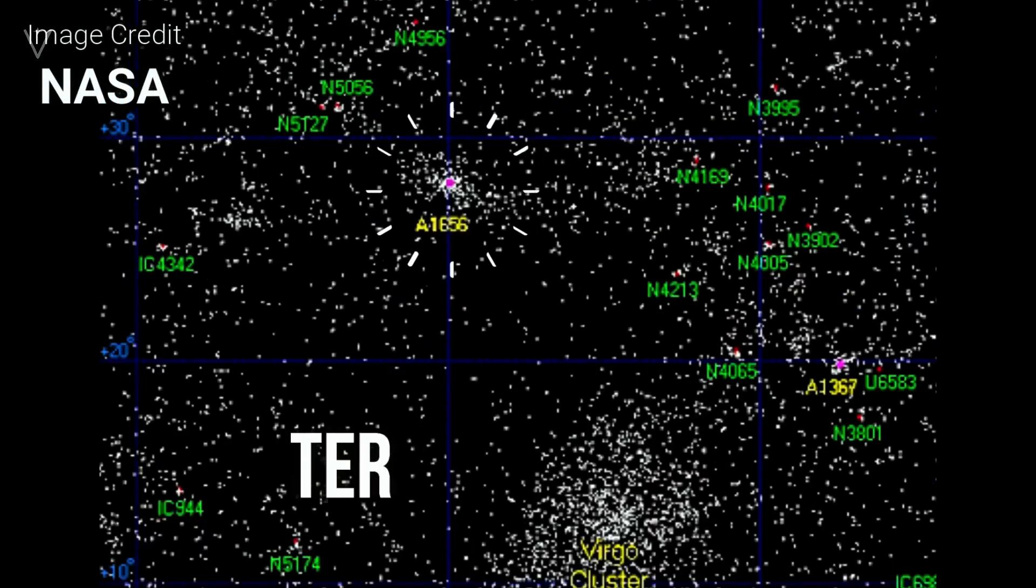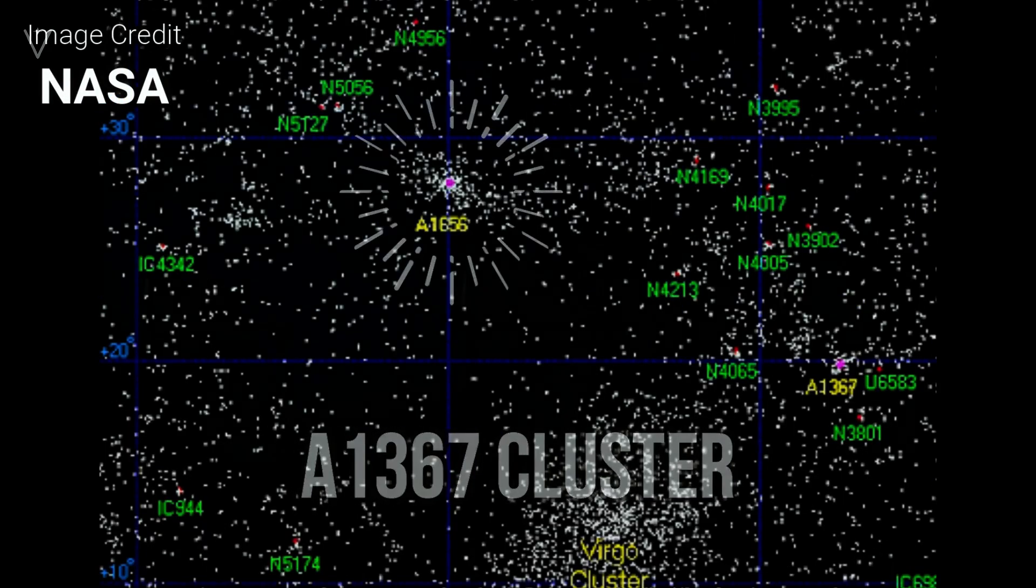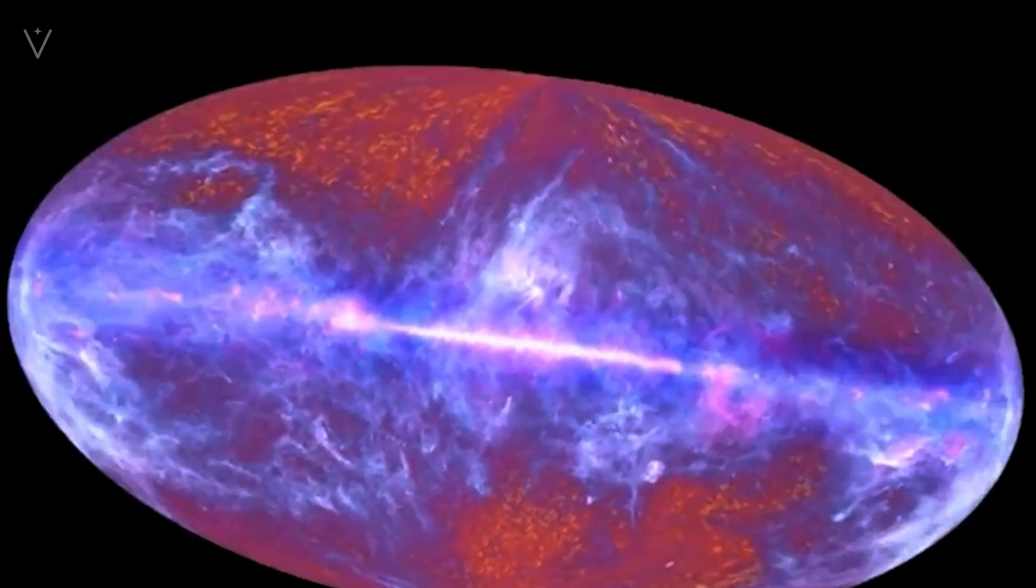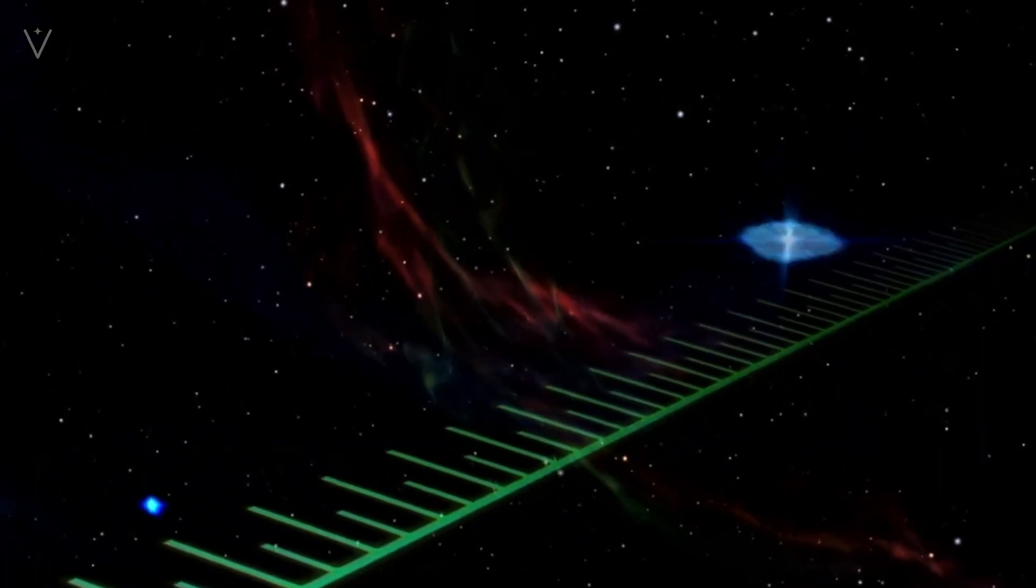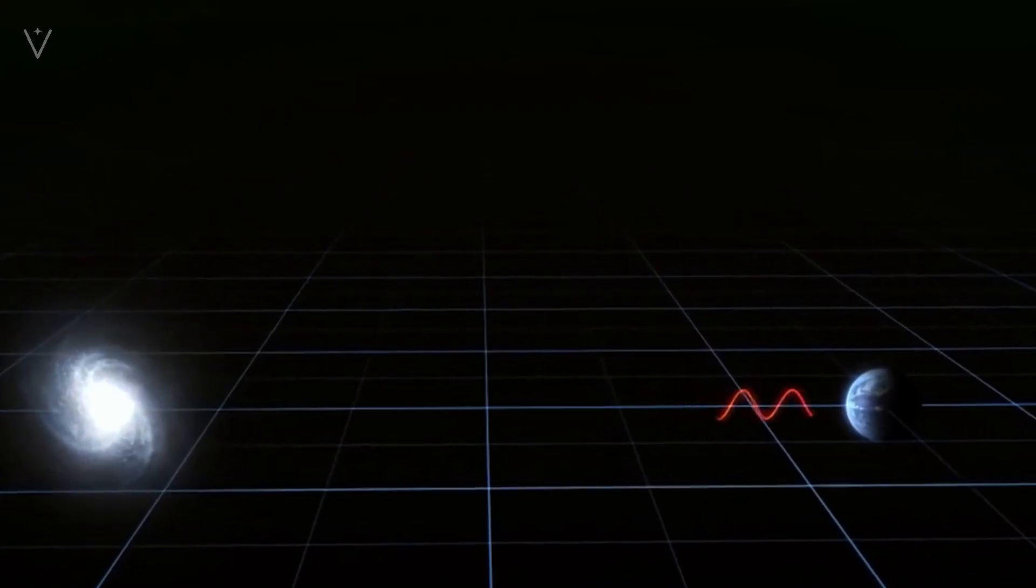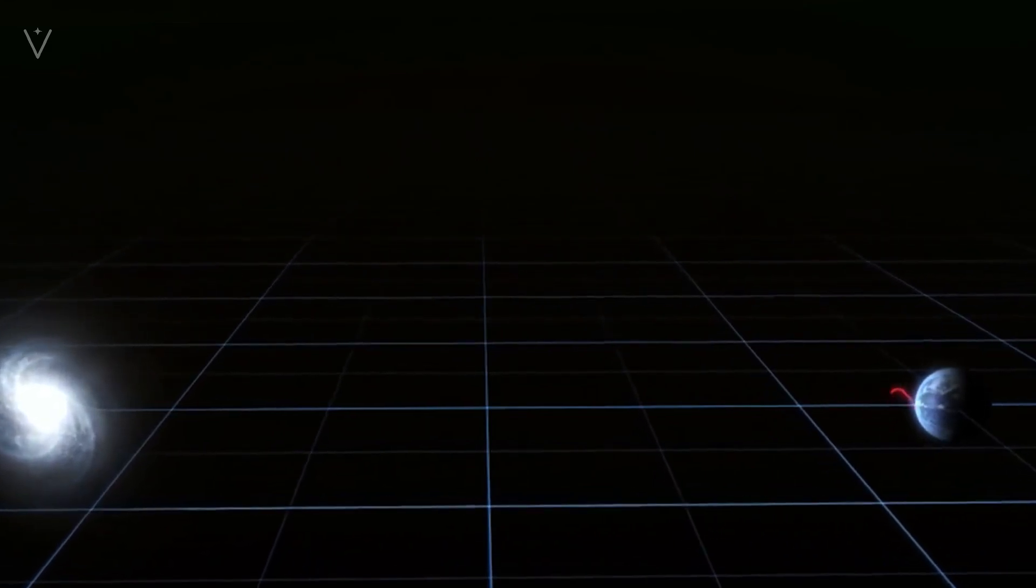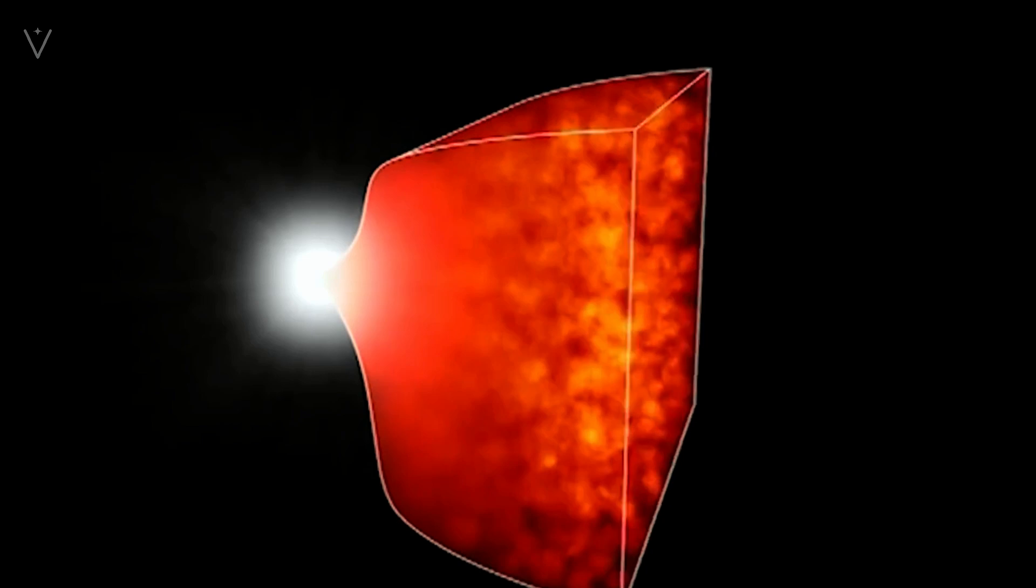The evolution of the universe that began at the point of the singularity was called the Big Bang by the scientific community. The so-called Big Bang is just a metaphor. It is not an explosion that spreads from a certain point to all directions, but an overall, isotropic expansion of the universe.